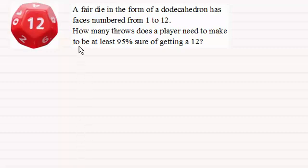To demonstrate this I've got this example where we have a fair die in the form of a dodecahedron with faces numbered from 1 to 12. How many throws does a player need to make to be at least 95% sure of getting a 12?